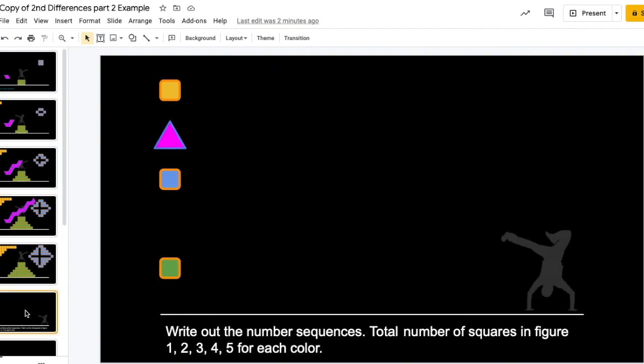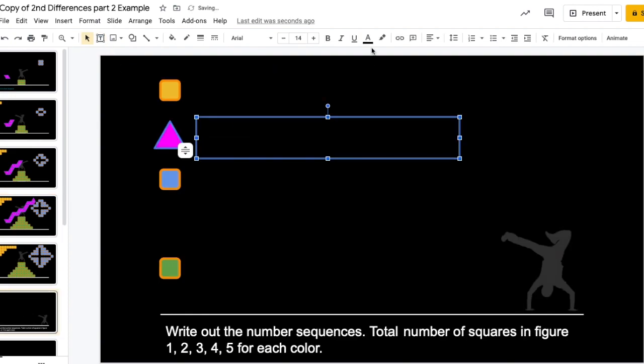Alright, 2, 5, 11, 20. That's how my pink triangle sequence begins. And again, I got that just by counting.